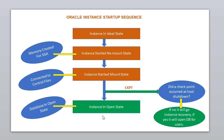This is the complete approach for the Oracle instance startup sequence. In summary: no mount — just memory, the SGA is created; mount — the instance connects to the control files; then before the open state it checks the checkpoint. If the checkpoint did not occur, the instance goes to recovery. If it did, the database opens for the respective users.